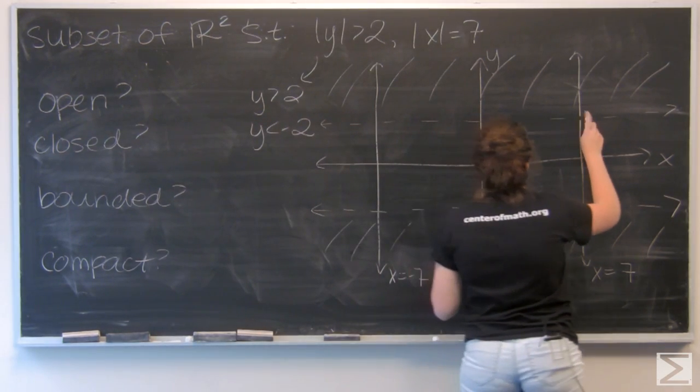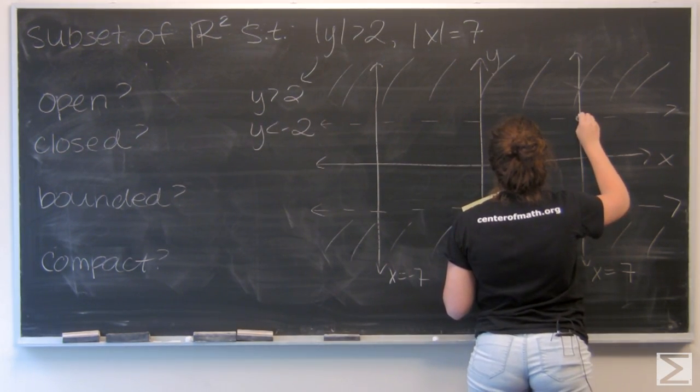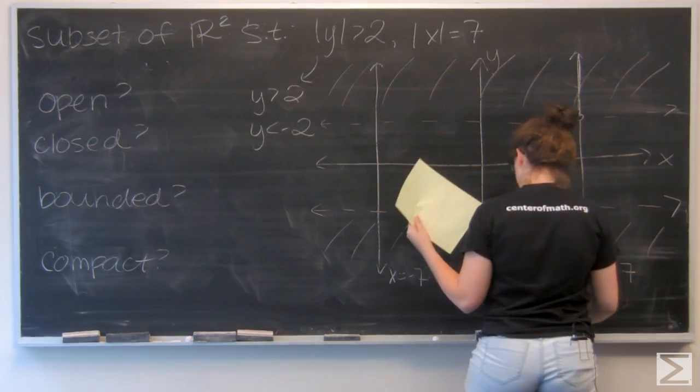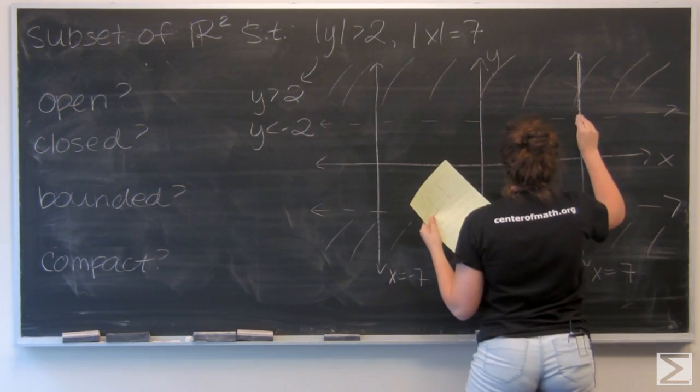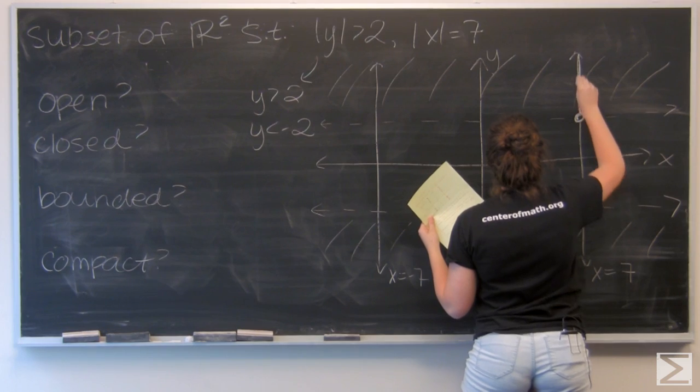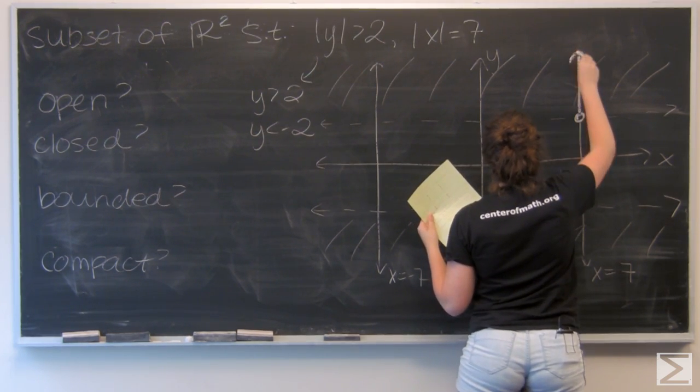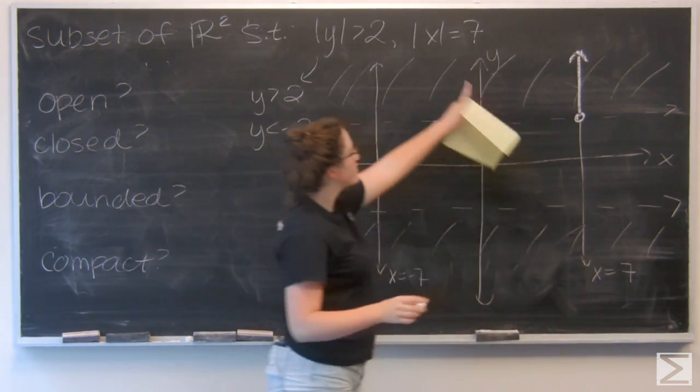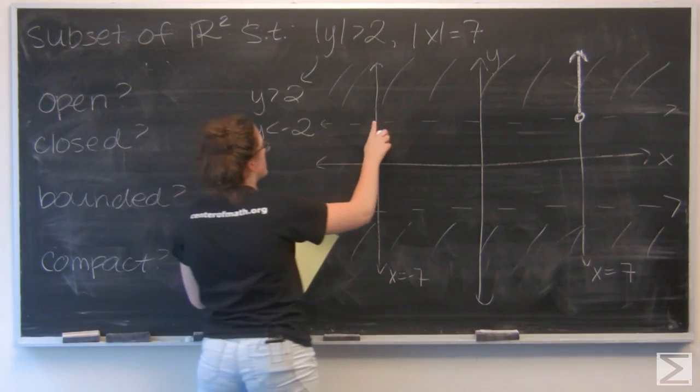So I have an open boundary kind of like a ray that goes upward here and again here.